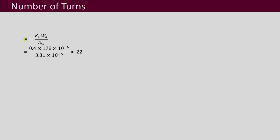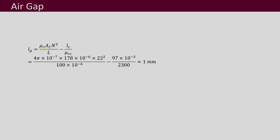We then calculate the number of turns using the corresponding equation, substituting all values, and find that approximately 22 turns are required — noting that if the answer comes out as a fraction it must be approximated. For the air gap, substituting all values into the air gap equation, we obtain approximately 1 mm of air gap needed for this inductor.